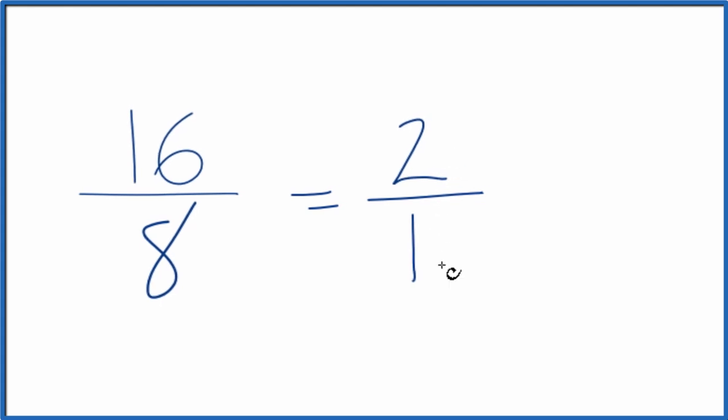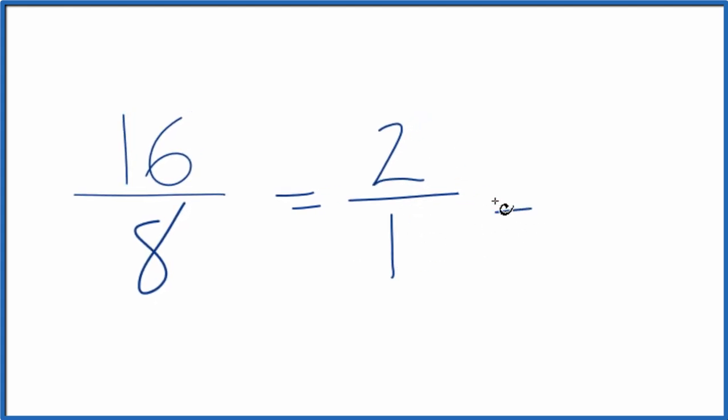2 over 1, we're just dividing by 1. So 2 divided by 1, that just equals 2. So we have the whole number 2.